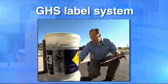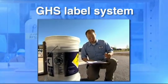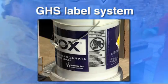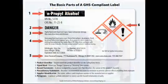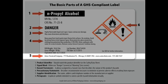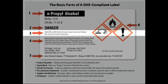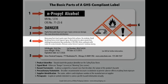All hazardous chemical labels must be legible in English and prominently displayed on the container. Labels must have a product identifier, a name, address, and telephone number of the chemical manufacturer or importer, a pictogram, signal word, a hazard statement, and a precautionary statement.